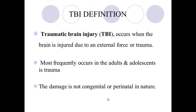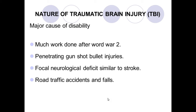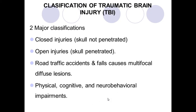Traumatic brain injury (TBI) occurs when the brain is injured due to an external force or trauma. This could be from the head being hit against something or any external force that injures the brain. It most frequently occurs in adults and adolescents. The damage is not congenital or perinatal in nature — it is due to external force, mainly head injury.